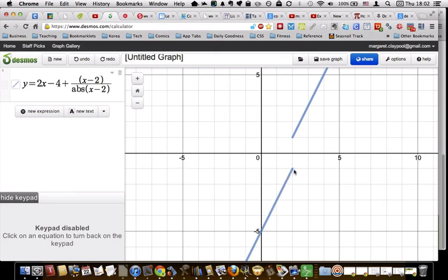And lo and behold, it does have a slope equal to 2. And there is something weird going on at x equals 2. And it looks like there's a discontinuity, which would be why the derivative does not exist at x equals 2. Cool, huh?